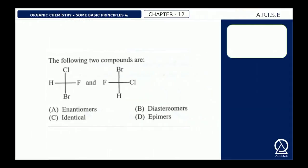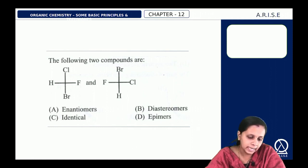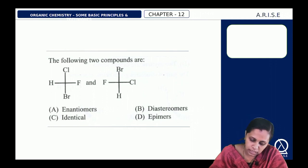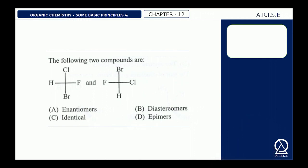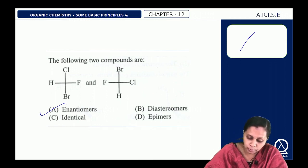Next: the following two compounds are — enantiomers, diastereomers, identical, or epimers? Both compounds are stereoisomers with the same properties but differ in optical rotation — they rotate plane polarized light equally but in different directions. So they are enantiomers. The answer is option A.